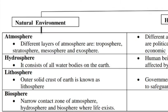So, natural environment includes the atmosphere. There are different layers of atmosphere — troposphere, stratosphere, mesosphere, and exosphere. There are 4 layers. We have learned that nitrogen is 78%, oxygen is 21%, argon and other gases make up the rest. Atmosphere is the envelope of all the gases surrounding the earth.